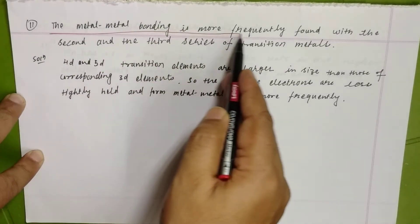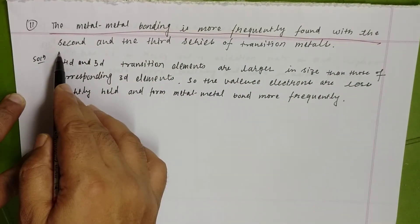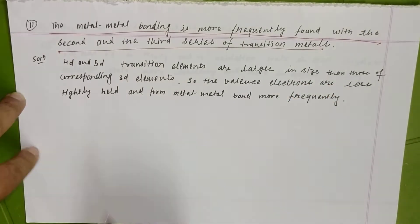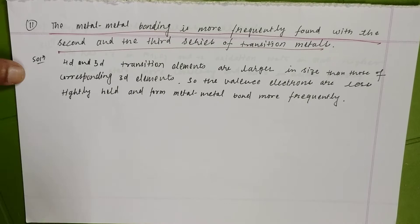The metal-metal bonding is more frequently found in the second and third transition series elements. So they are asking why the metal-metal bonding is more frequently found in the second and third transition series.